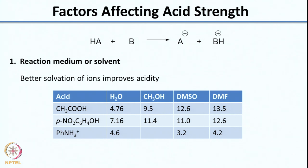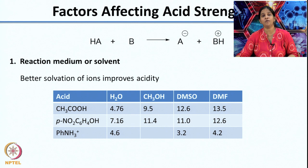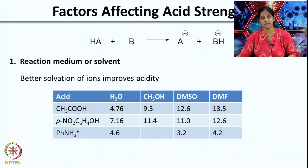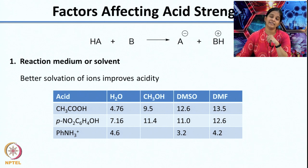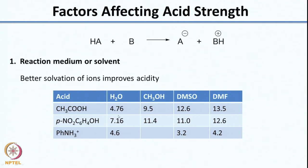For a neutral acid, it is important to look at stability of the conjugate base. In a solvent like water, which is very good at solvating anions, acidity is improved. Acetic acid has a pKa of 4.76 in water because the conjugate base is solvated very well. As you go to methanol, pKa increases because solvation is less. Moving to DMSO and DMF shows a further increase. Similarly, paranitrophenol starts at a pKa of 7.16 in water, then increases as you vary solvent to methanol, DMSO, and DMF.